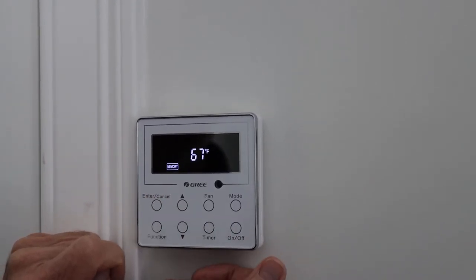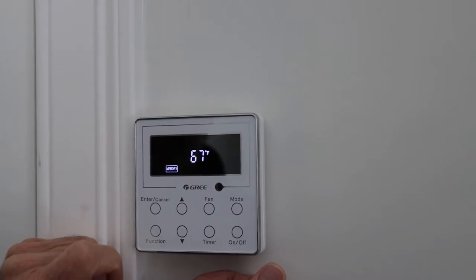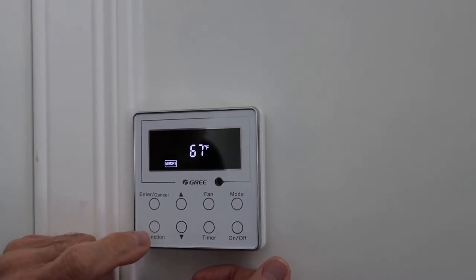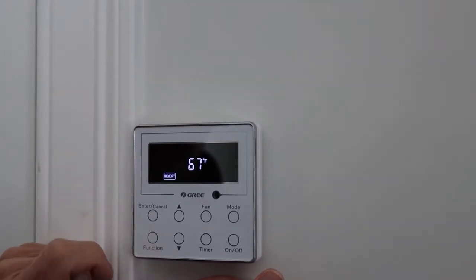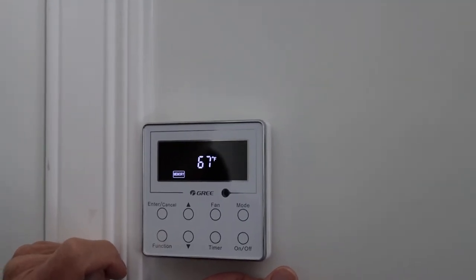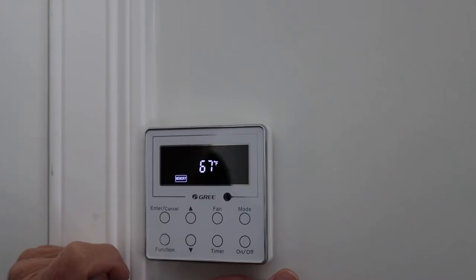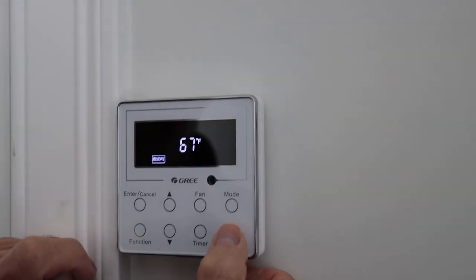Okay, so when it shows zero two set, that means that this unit on the wall is controlling temperature-wise for the cassette unit in the ceiling. So it's getting temperature commands from this unit on the wall.